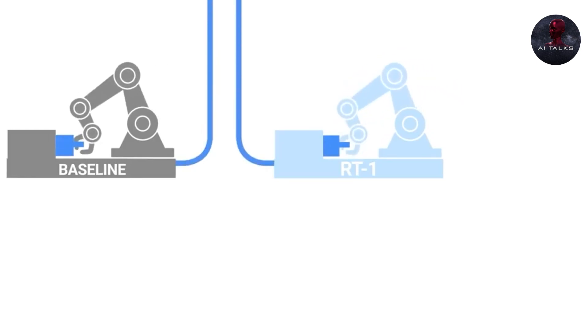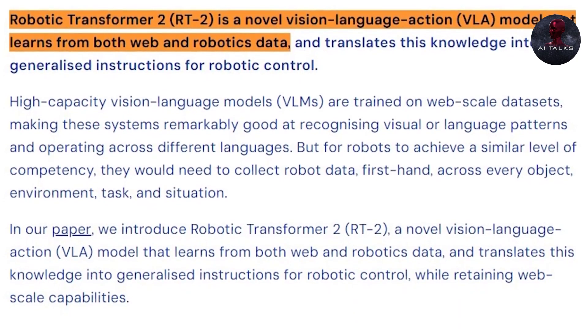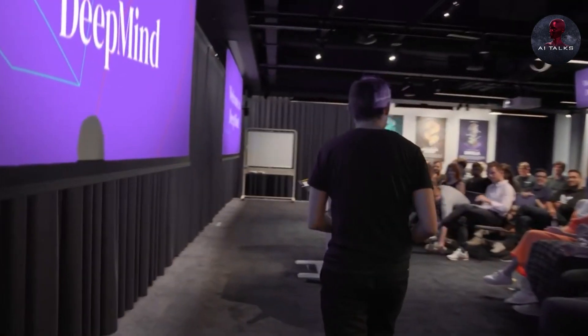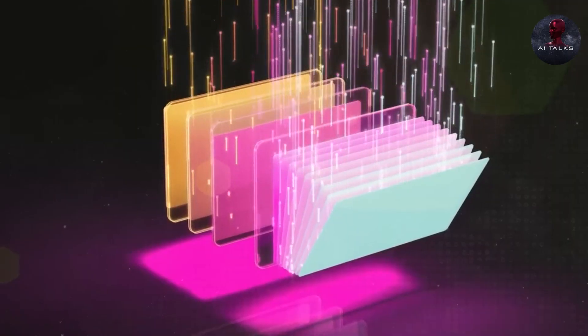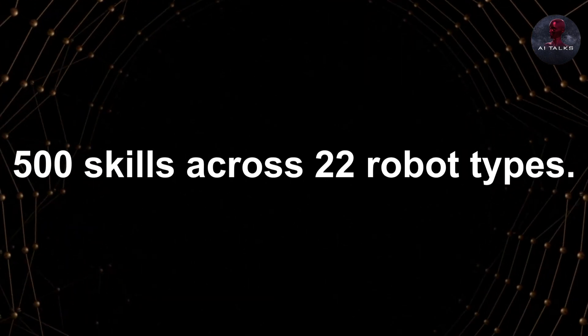To change this, DeepMind gathered an alliance of global research teams. Their mission? To create an unprecedented open-sourced embodiment dataset, with over 500 skills demonstrated across 22 robot types.